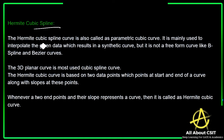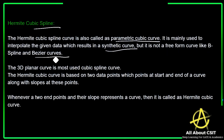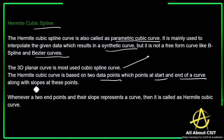Now let's see the Hermite cubic spline. The Hermite cubic spline curve is also called a parametric cubic curve. It is mainly used to interpolate given data, which results in a synthetic curve, but it is not a free-form curve like a B-spline or Bézier curve. The 3D planar cubic spline is most commonly used. The Hermite cubic curve is based on two data points — the start and end of a curve — along with the slope at these points.